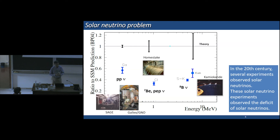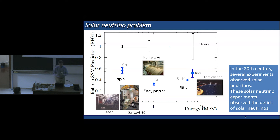I should mention that in the late 1980s, people had real progress in the understanding of neutrino oscillations in matter. Therefore, already in the 20th century, people analyzed the solar neutrino data and estimated the neutrino oscillation parameters, assuming the so-called MSW effect — neutrino oscillations in matter.